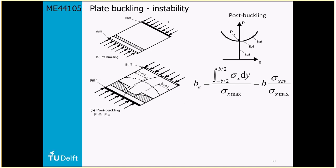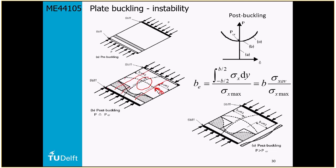If you go over the initial buckling limit, there is an effective width concept where you can go up to the yield limit before failure. This is the ultimate buckling limit: it takes into account that after initial buckling at the center, at the edges you can still increase stress because it has not reached yield or the ultimate limit.